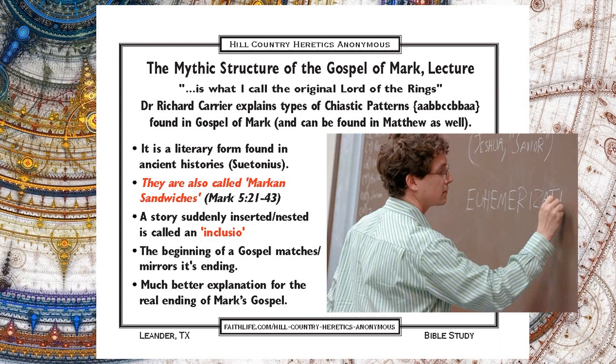Another example is the fig tree. Jesus curses the fig tree, then Jesus clears the temple, and then Jesus goes out and confirms that the fig tree is withered and gives a speech about it. So we have the fig tree cursing story, with Jesus clearing the temple story stuck in the middle of it. These stories are nested — turned into a chiasmus, an inclusio, a Markan Sandwich — which tells you there's some meaning to it. These stories are related. You're supposed to understand the connection.